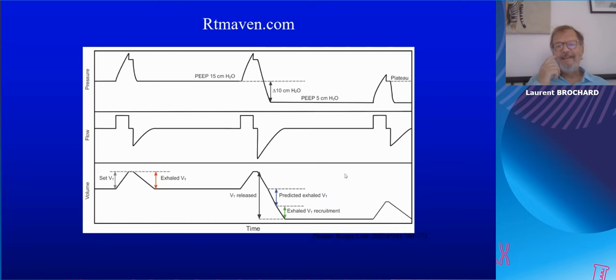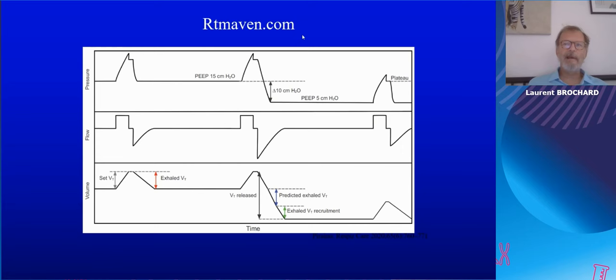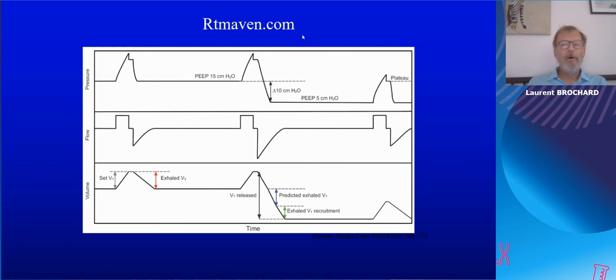We designed a very simple test. I encourage you to go to the website rtmaven.com, where you'll find short videos of one to two minutes explaining how to perform the technique on any ventilator. It will tell you whether the patient's lung is on the recruitable side — and could benefit from PEEP — or the non-recruitable side, meaning you should use the lowest possible PEEP.